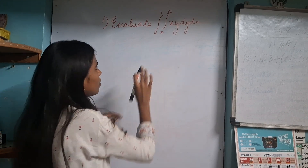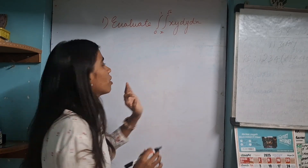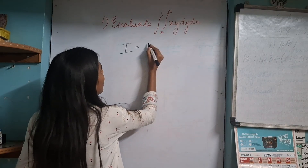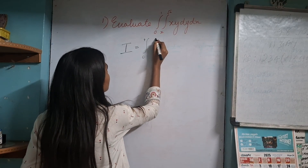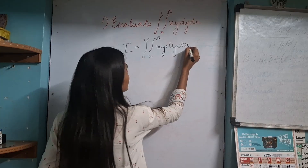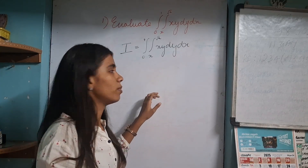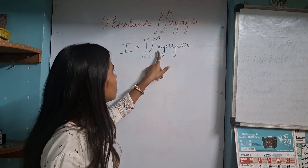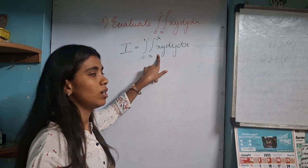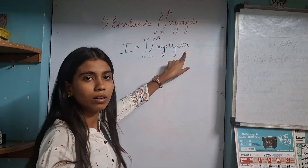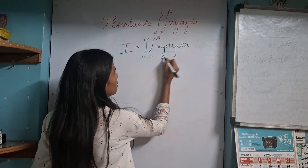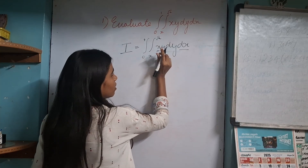Starting with the first question: whenever they give you a question such as 'evaluate,' the first thing you have to do is substitute it to I. I is equal to the question which is given. Now, since it is double integration, we do integration two times. The question arises whether to integrate for y or for x. You can understand this by looking at dy and dx. If dy is given, then you integrate y first. If dx is given, then you integrate x first.